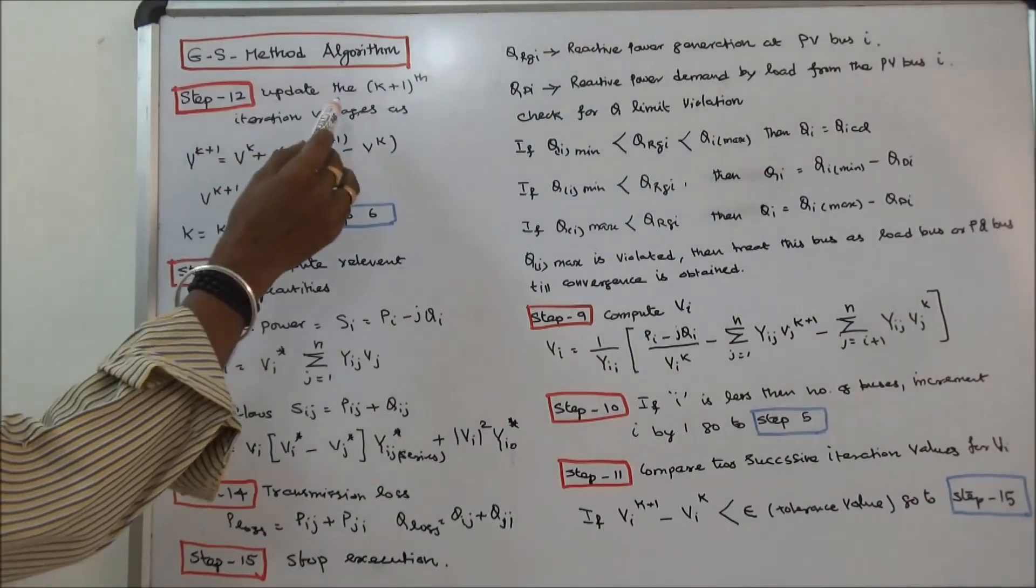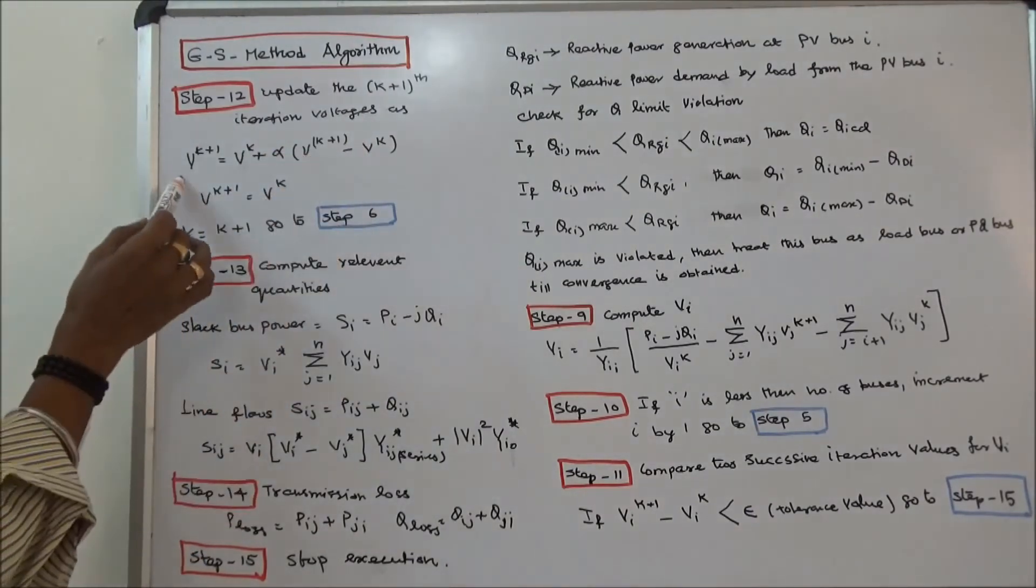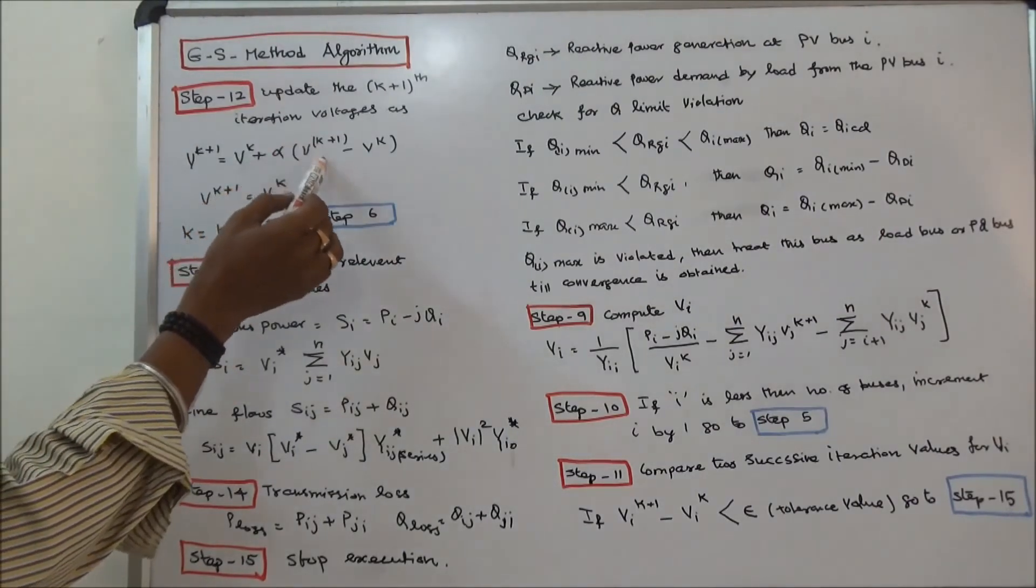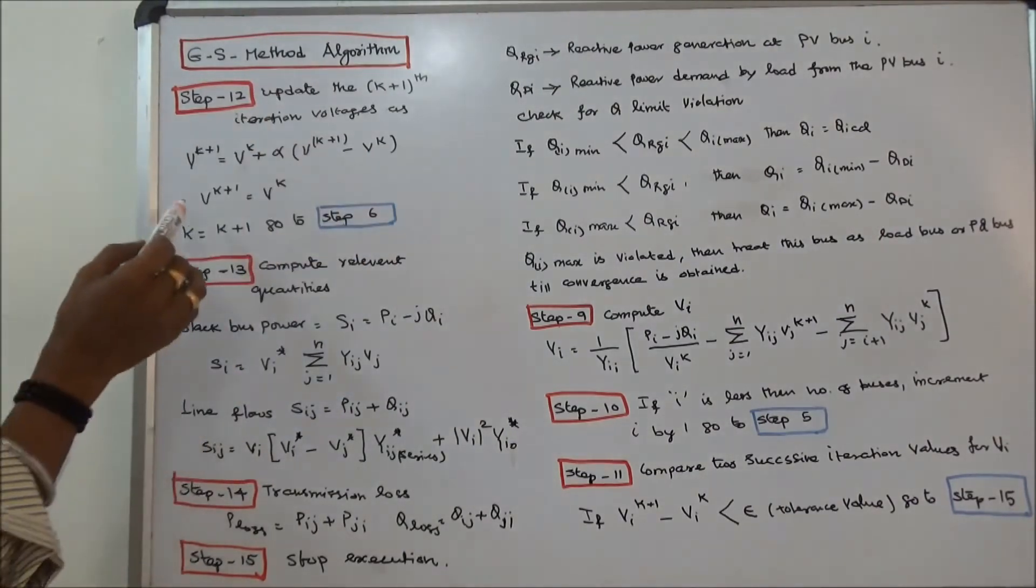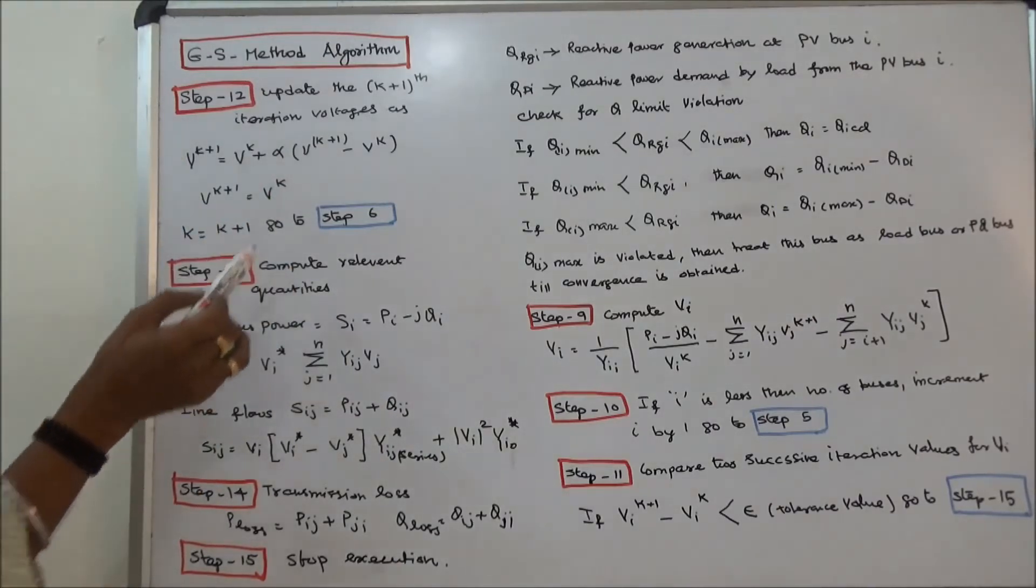Step 12: Update the K+1 iteration voltages as VK+1 is equal to VK plus acceleration vector alpha into VK+1 minus VK. Then VK+1 is equal to VK. K is equal to K plus 1. Go to step 6.